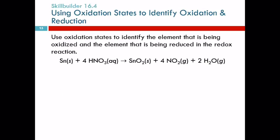Use oxidation states to identify the element that's being oxidized and the element that's being reduced in the redox reaction. Well, oxidation states. Here we have tin all by itself. This oxidation state is zero. We could go through and do all of these in order, and you're welcome to do that. I'm just going to look at tin and see what's happening with tin over here.